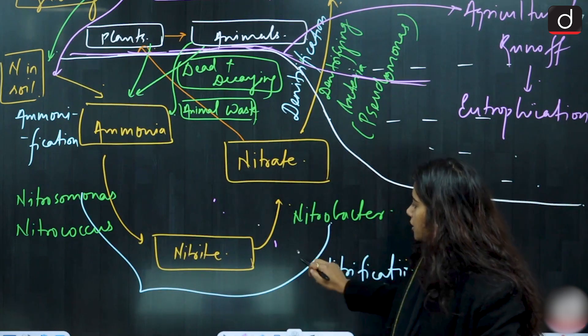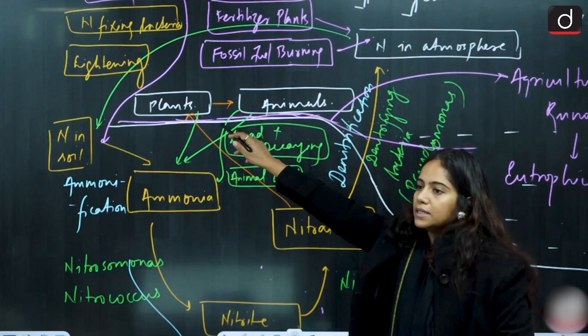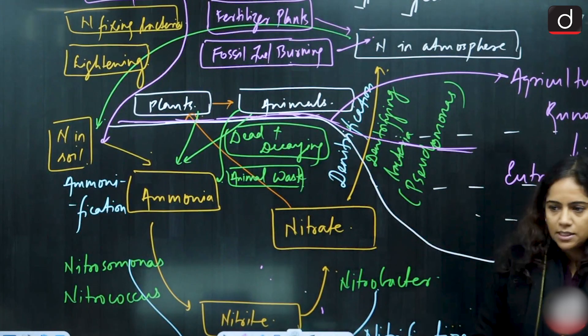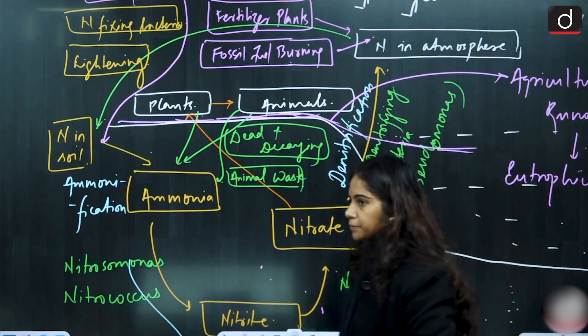So this is what is given to the plants, that is what is given to the next trophic levels. That is how it enters the living biomass.